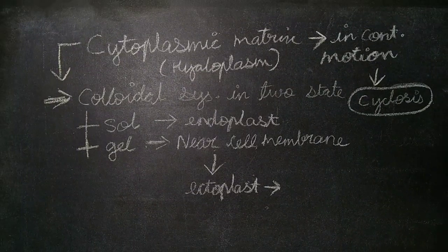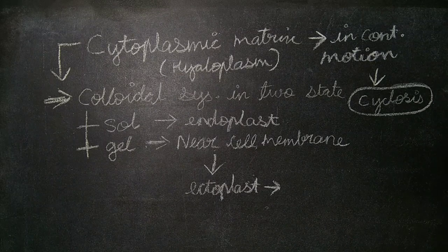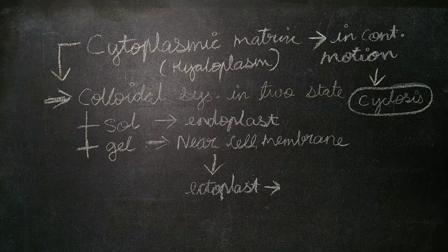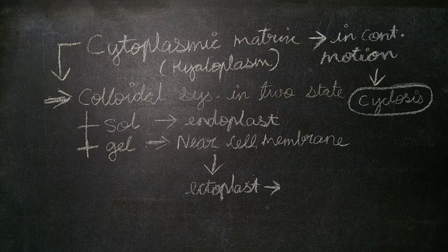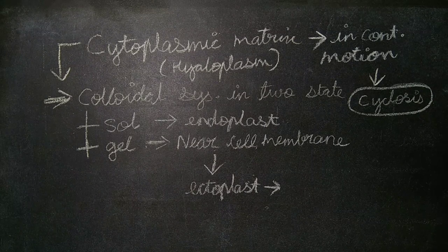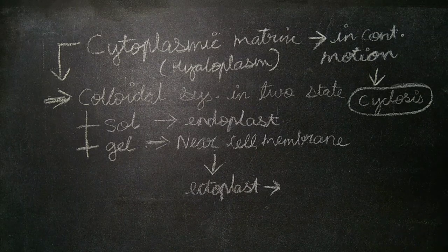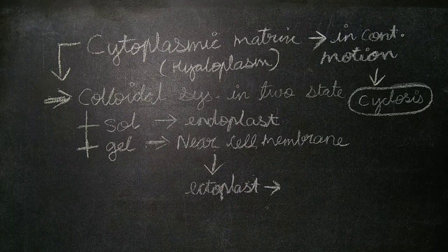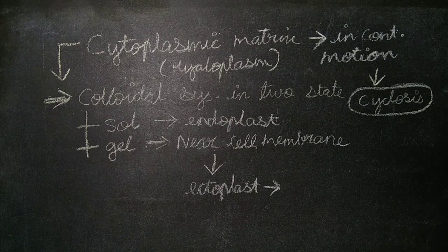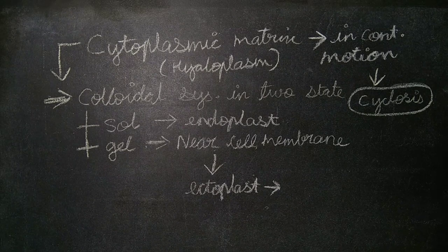Cytoplasmic matrix is also called hyaloplasm and is in continuous motion. This phenomenon is also called cyclosis. Cytoplasm is a colloidal system in two states: sol and gel. The gel form usually occurs near the cell membrane and is called ectoplast, and the sol form is called endoplast.